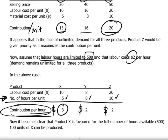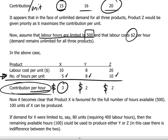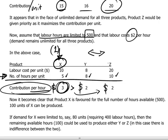Now we can look at our conclusions based on this bottleneck. Based on the scarce resource of labor hours, for every hour we employ producing X, we produce $3 of contribution, which exceeds both Y and Z. In other words, we would rank production of X first, and we would be indifferent between Y and Z for any remaining labor hours. We would orient all production towards X and produce 100 units of X, requiring 500 labor hours, thereby maximizing our contribution.